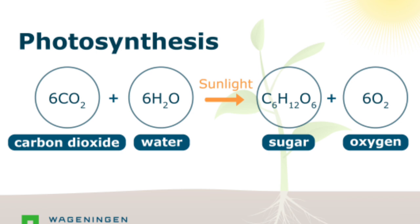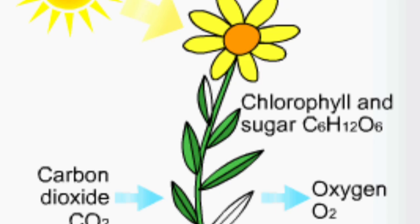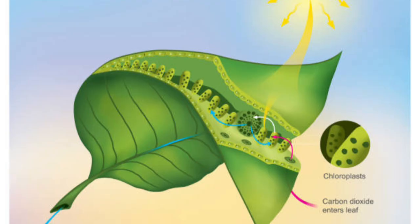Plants take in carbon dioxide, CO2, from the air, and water, H2O, from the soil, and use sunlight to produce glucose, C6H12O6, and oxygen, O2.